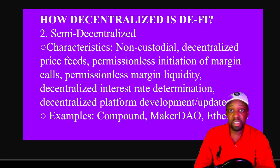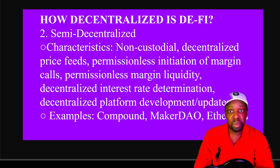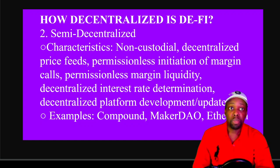The next level is semi-decentralized. Characteristics include: non-custodial, so you maintain control of your coins; decentralized price feeds using oracles like Chainlink; permissionless initiation of margin calls — automated, or someone else can margin call you if you're in the wrong zone. Decentralized interest rate determination is programmed into the blockchain, and decentralized platform updates are voted on by token holders. Examples include Compound, MakerDAO, and Ethereum itself.